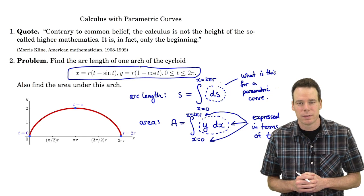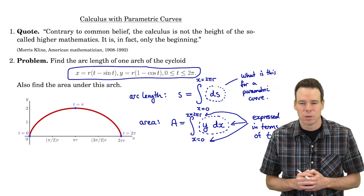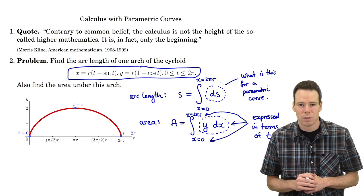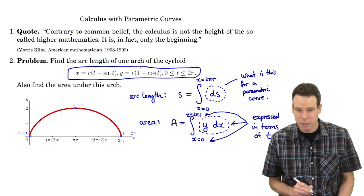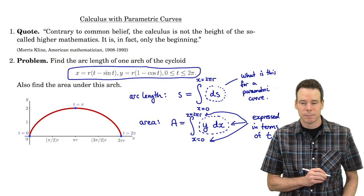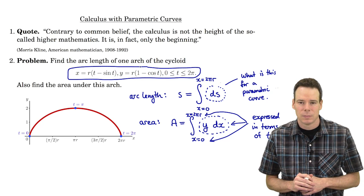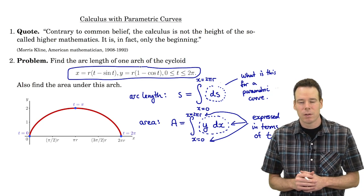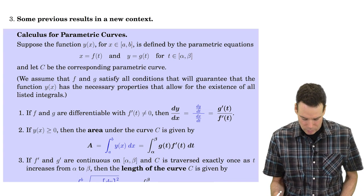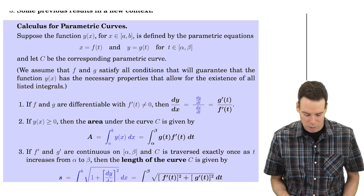We know the form that the integral has to take for either the arc length or the area problem. We now just have to figure out how to write it in terms of the parameter t. For the area it's a straightforward substitution, and for the arc length differential we'll work that out too. Let's revisit some of the results we had and write them in terms of our parameter t.